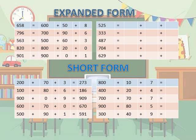Coming to the next topic — short form. Short form is when we add the expanded form, we get the short form of a number. 200 plus 70 plus 3 — that is 273: 2 is in the 100s place, 7 is in the 10s place, and 3 is in the 1s place. Next is 100 plus 80 plus 6 — place the numbers according to their position, so we get 186.